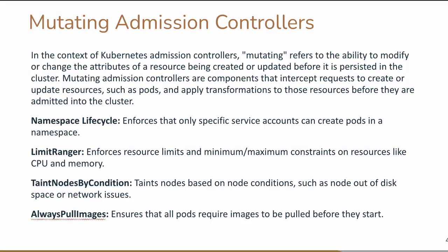Next is TaintNodeByCondition — for conditions such as disk space or network issues. You can taint the nodes, and then only pods which have the toleration for that taint will be deployed. This is particularly useful if you want to skip pods on nodes with certain disk space or network type issues. TaintNodeByCondition is an example of a mutating admission controller — in the background, Kubernetes uses the mutating admission controller for enforcing this behavior.